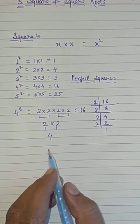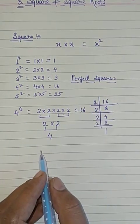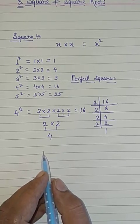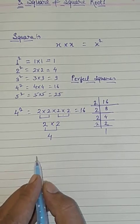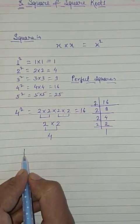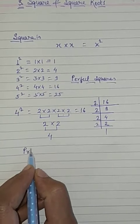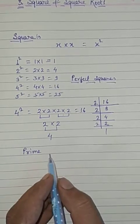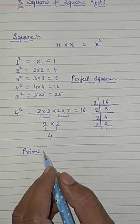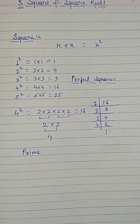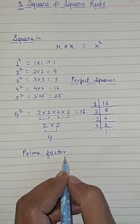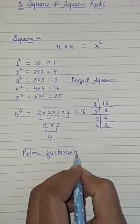Now, we have been given a perfect square and asked which number is whose square. So we have to solve using a particular method which is known as the prime factorization method.